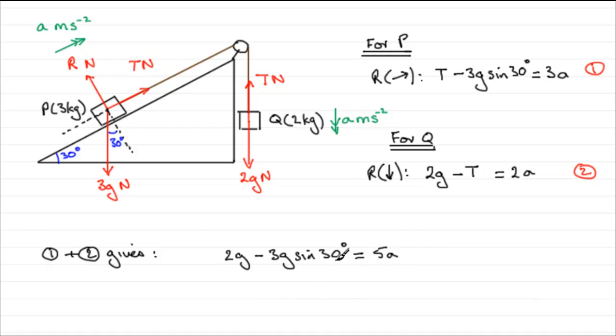And if you work this out on your calculator, take G as 9.8, the acceleration due to gravity. Just work this side out and you should find you get 4.9.